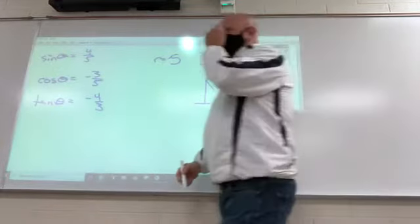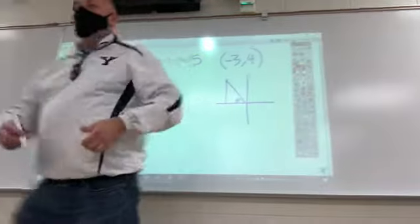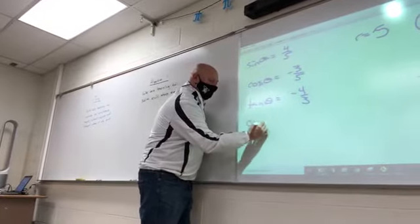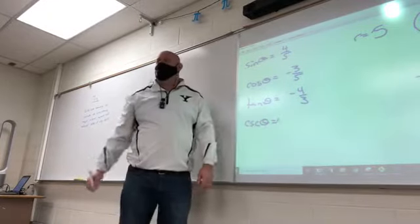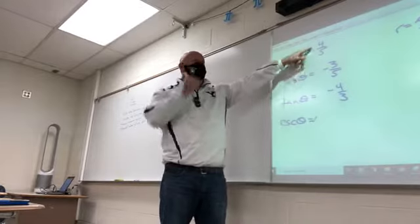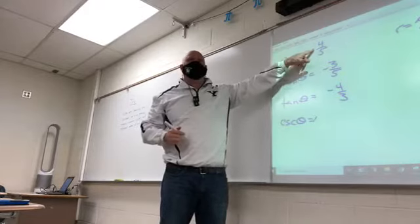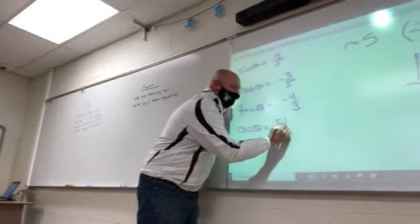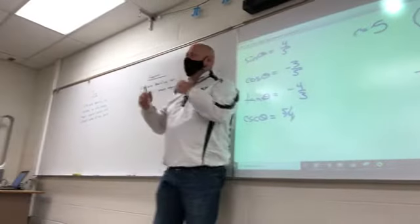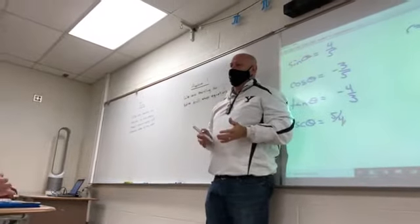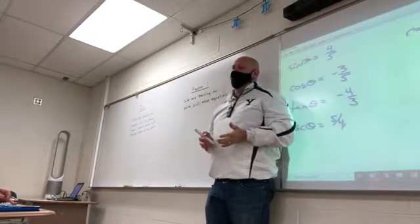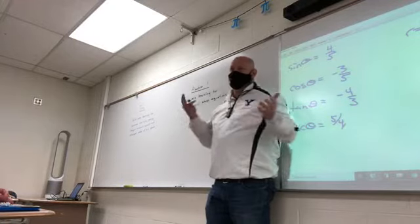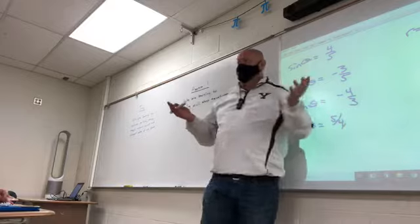So if I have these three — sine, cosine, and tangent — do I also now know cosecant? If sine is 4 fifths, cosecant is just 5 fourths. You don't need another button on your calculator — all you do is take the reciprocal of it.